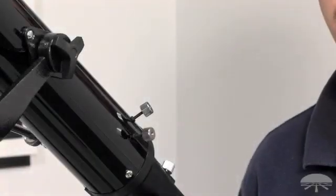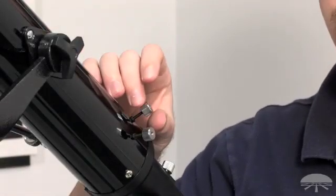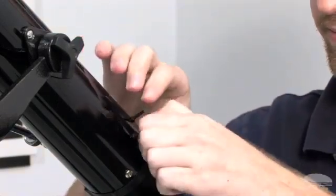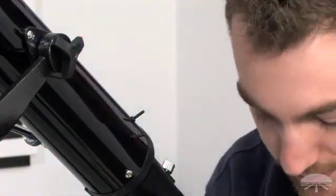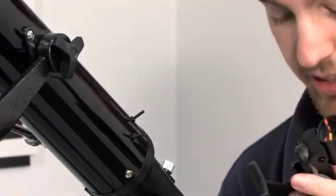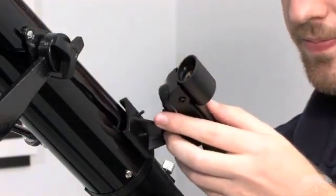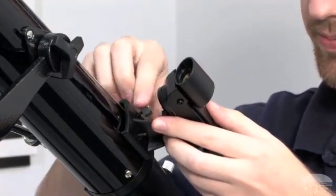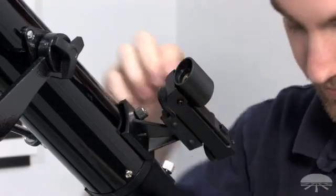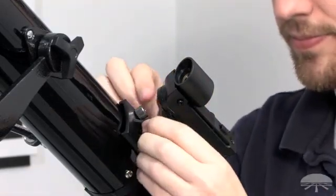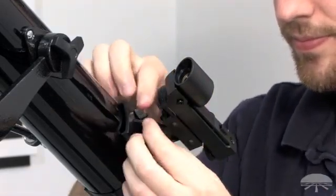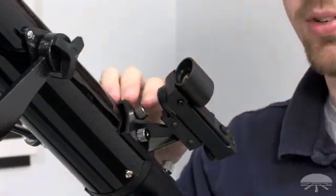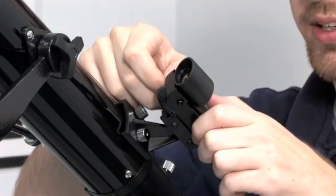To attach the easy finder to your telescope, simply remove the thumbscrews and the plastic tab at the front of your easy finder. Slide the easy finder onto the attachment post and replace the thumbscrews. After you've tightened the thumbscrews, simply remove the plastic tab at the front of your easy finder.